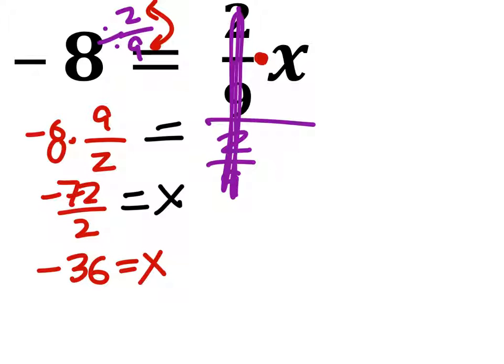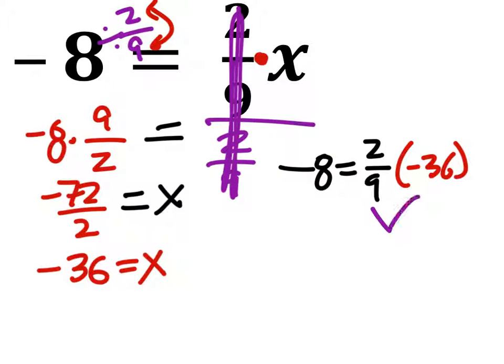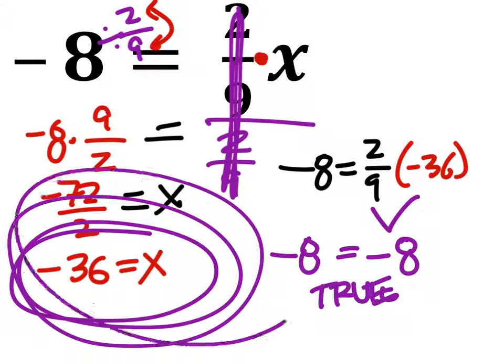The next thing I need to do is solve this by writing the original equation, but instead of x, I will replace x with negative 36 and check. And then we will multiply 2 ninths times negative 36. You can put that into a calculator. And you get negative 8 equals negative 8 is true. Now that we know that this is true, we know that our answer is true, and we are completed.